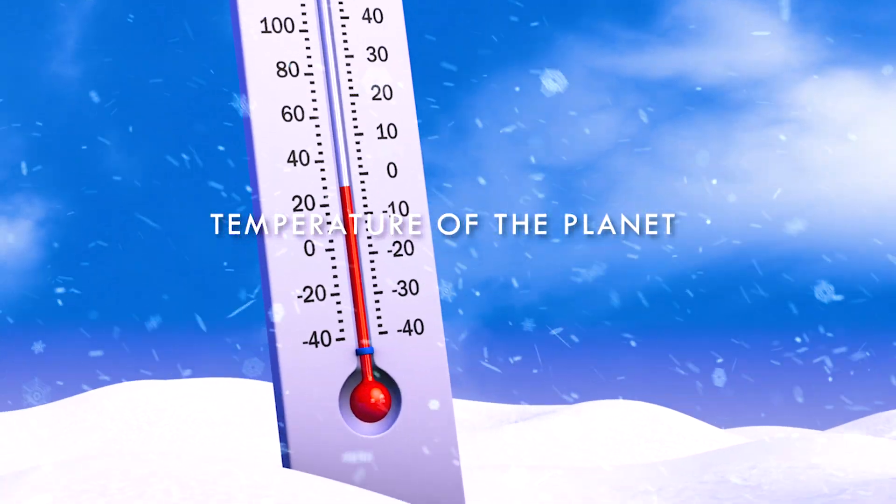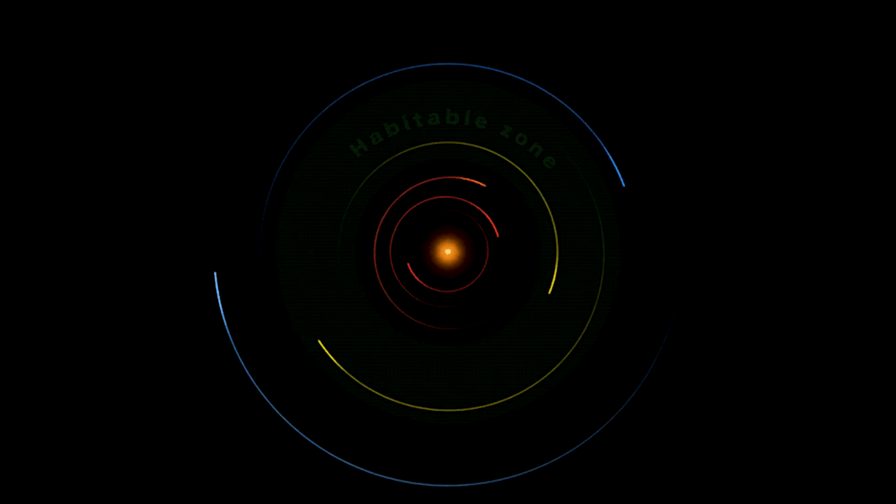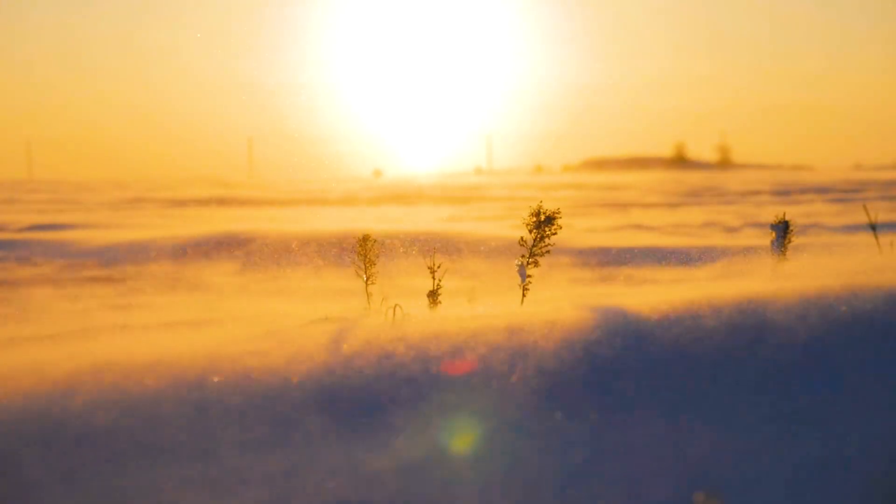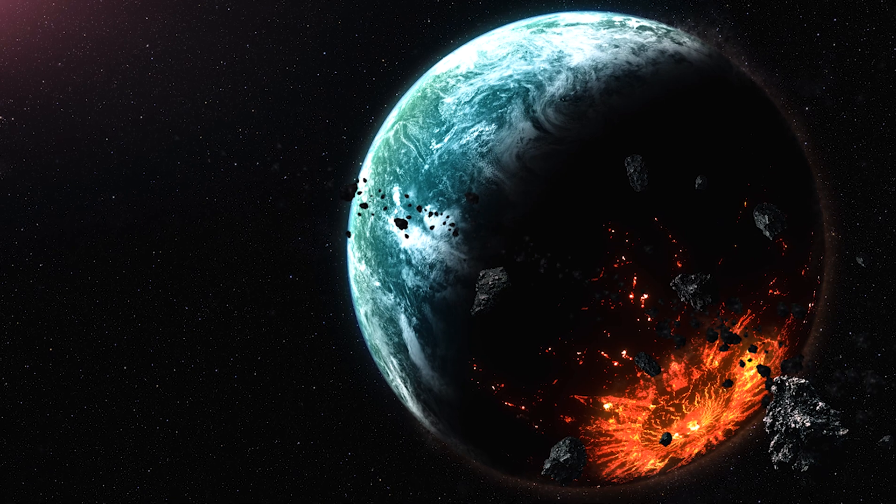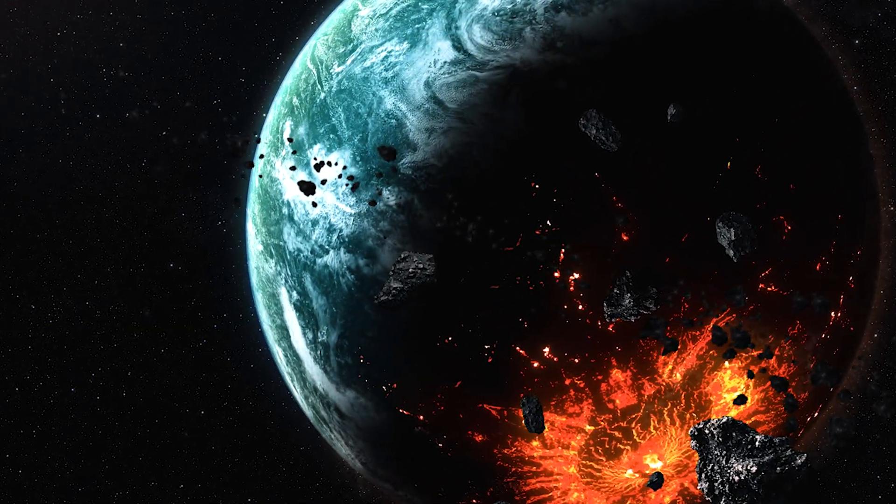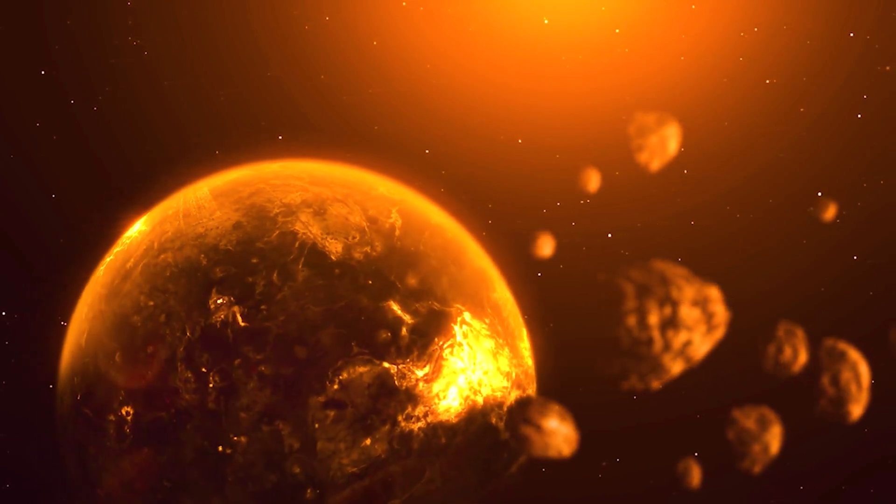The last criterion is the temperature of the planet. Although planets in the habitable zone typically have ideal temperatures, this isn't always the case. Sometimes, even planets in the habitable zone have extreme temperatures, making it impossible for any life form to survive.